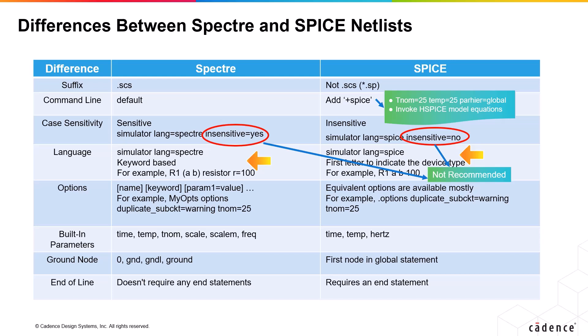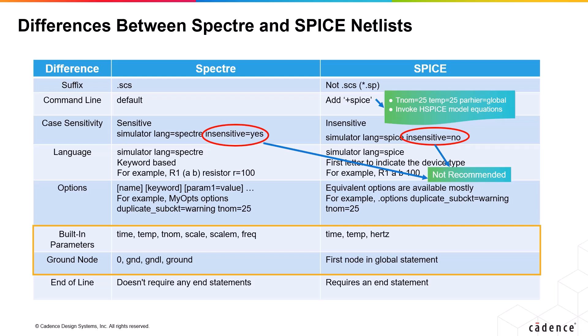Spectre has instance statements that are keyword-based with a specific syntax — keywords like resistor, capacitor, options, etc. denote Spectre syntax. In SPICE, the first letter of an instance name indicates the device type; for example, R1 denotes a resistor instance. SPICE has equivalent syntax options as those in Spectre. These include built-in parameters and ground node options used in both Spectre and SPICE. Notice that in Spectre, you can have multiple global statements in a design.